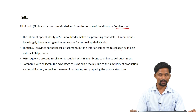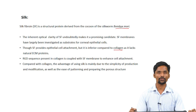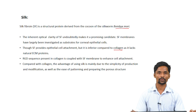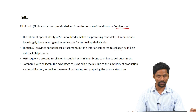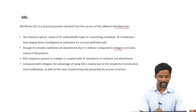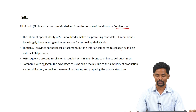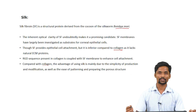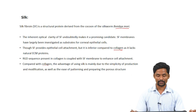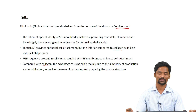To overcome the poor cell attachment of silk fibroin, researchers introduced the RGD domain into the silk fibroin membrane to improve its cell attachment properties. Compared with collagen, the advantages of silk fibroin are that it is simple to produce and modify, and it is easier to produce porous scaffolds using silk fibroin.